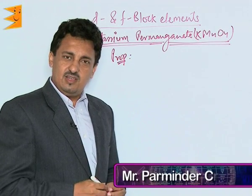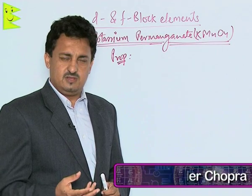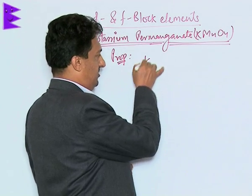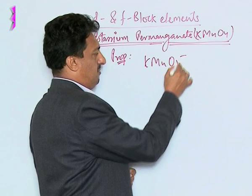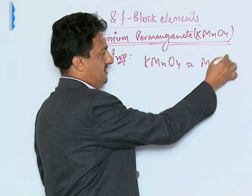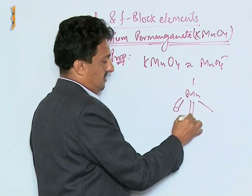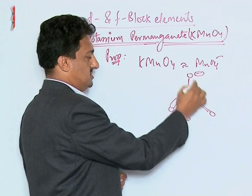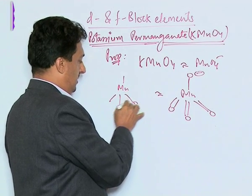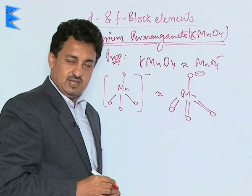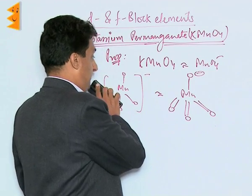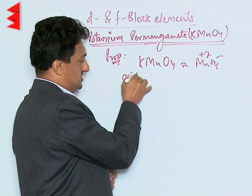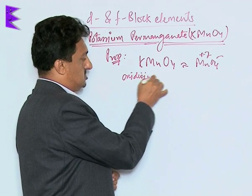Potassium permanganate is a dark purple-colored crystalline solid, partially soluble in cold water but completely soluble in hot water. Its structure is very similar to potassium chlorate — it is isostructural to KClO4. In the permanganate ion (MnO4⁻), manganese is sp3 hybridized with a negative charge distributed over the oxygen atoms through resonance. Since manganese is in the +7 oxidation state, it is a very strong oxidizing agent.